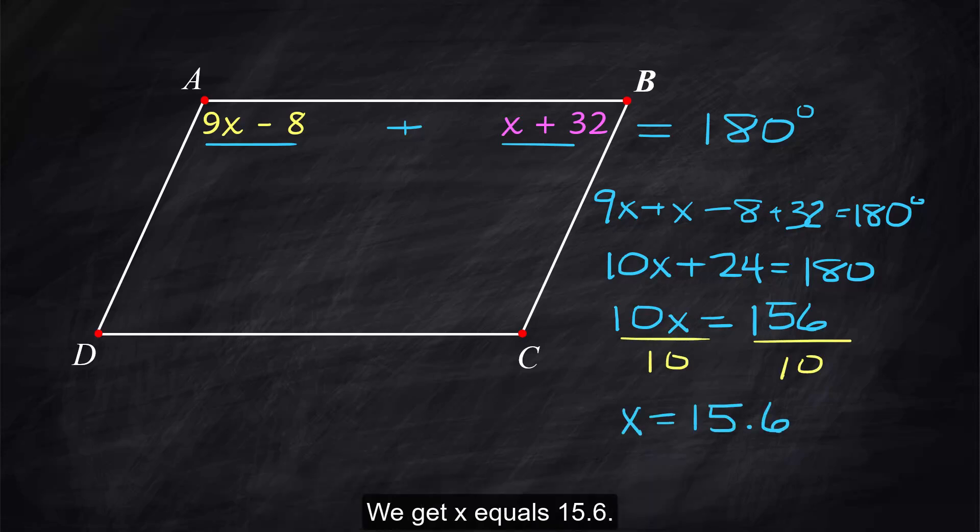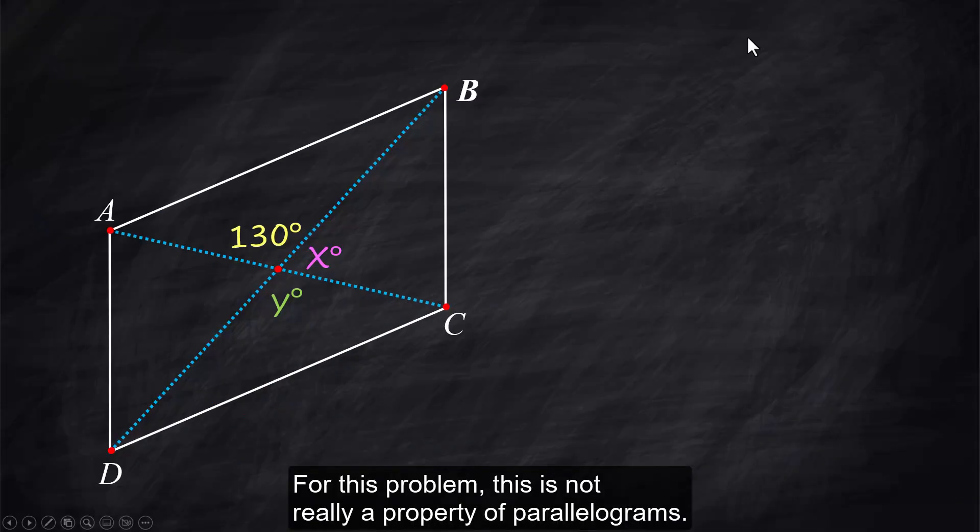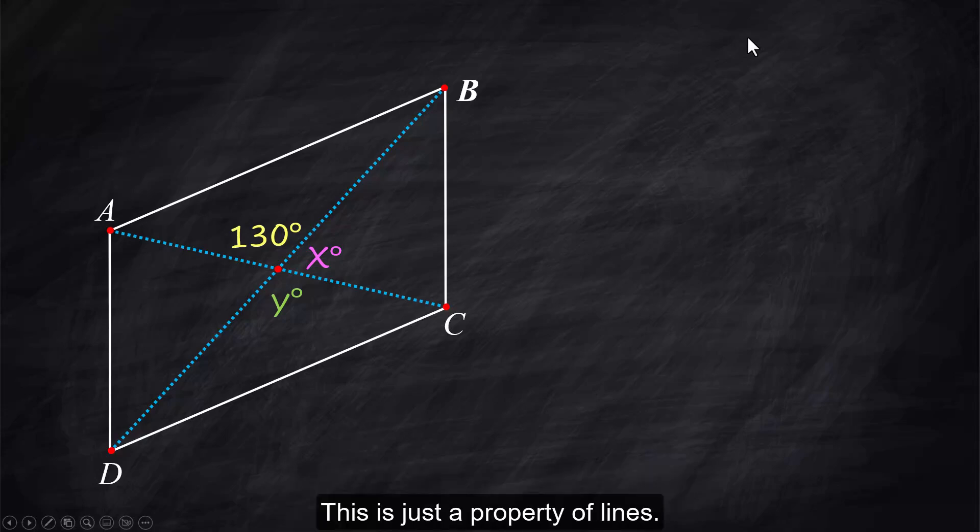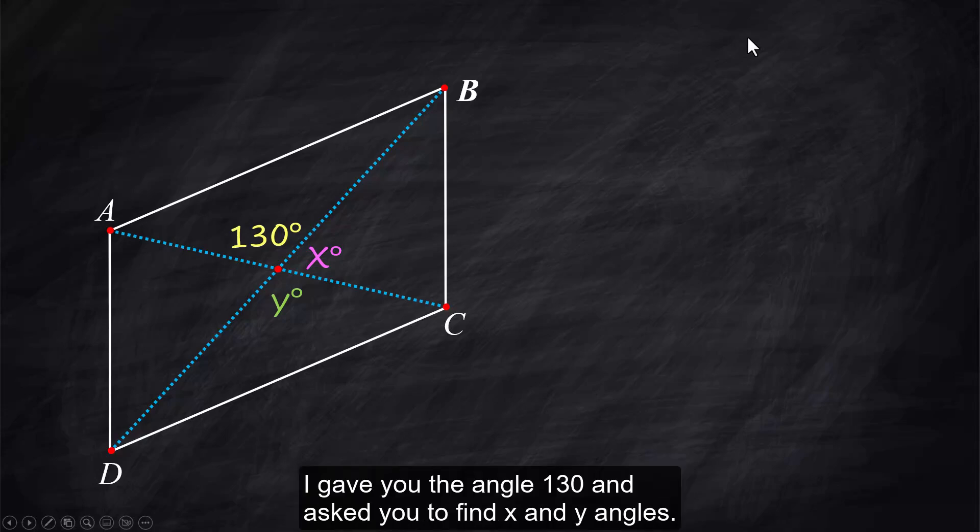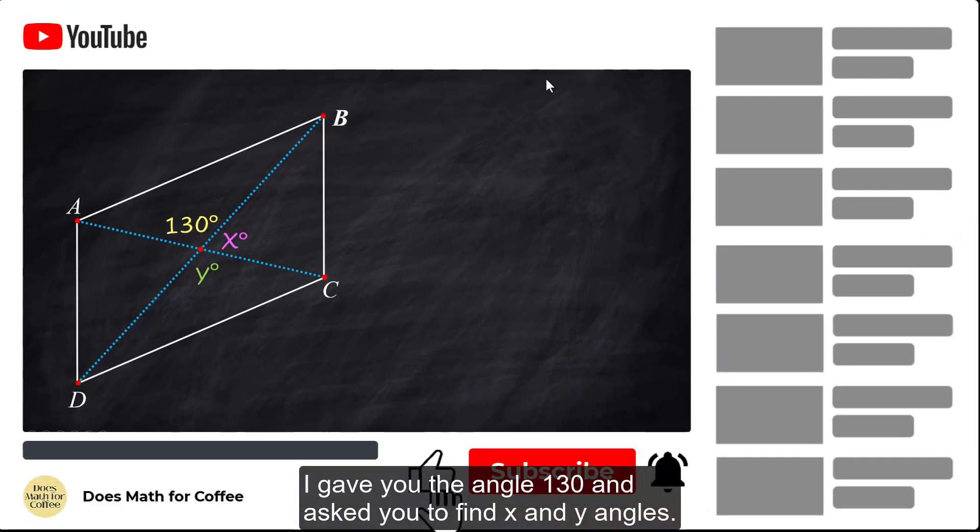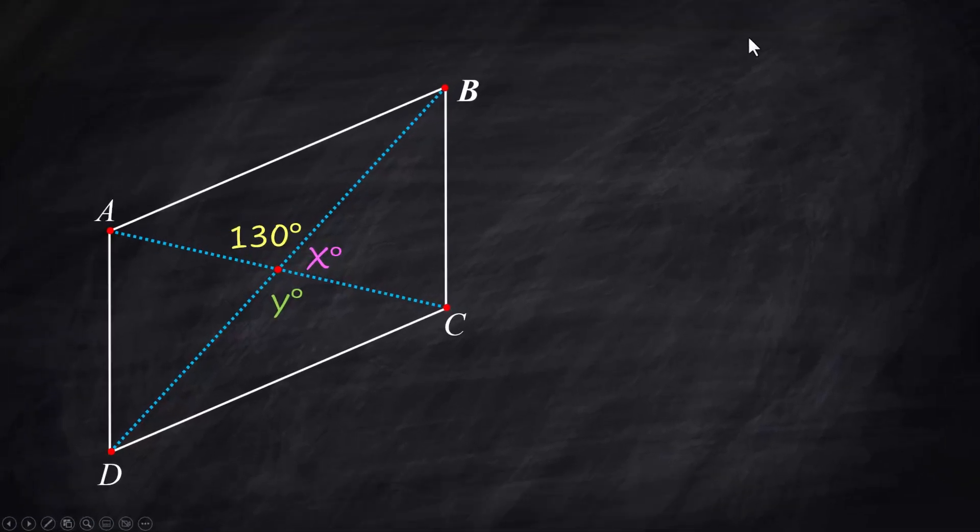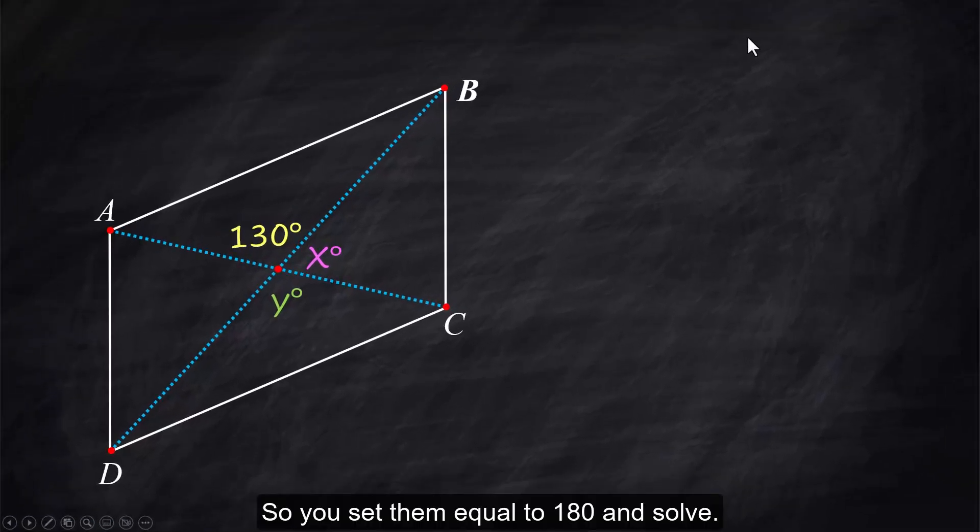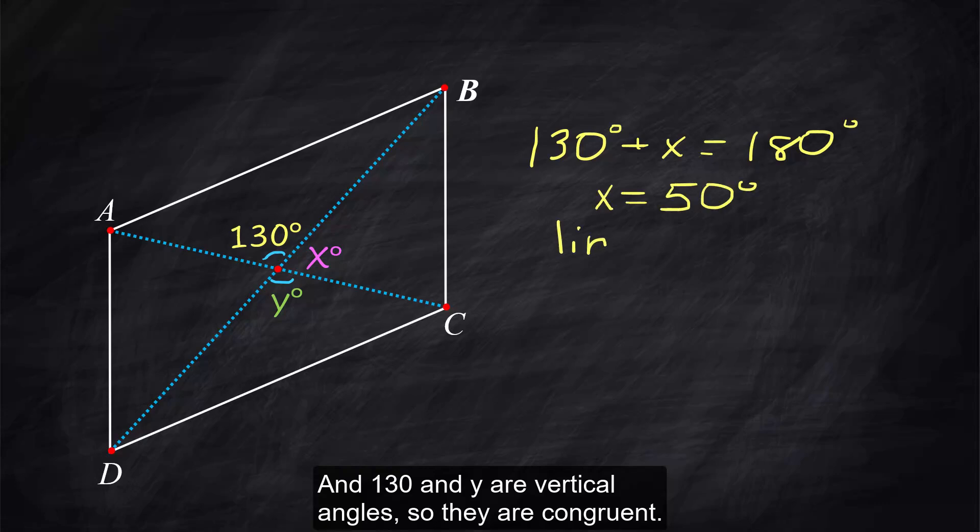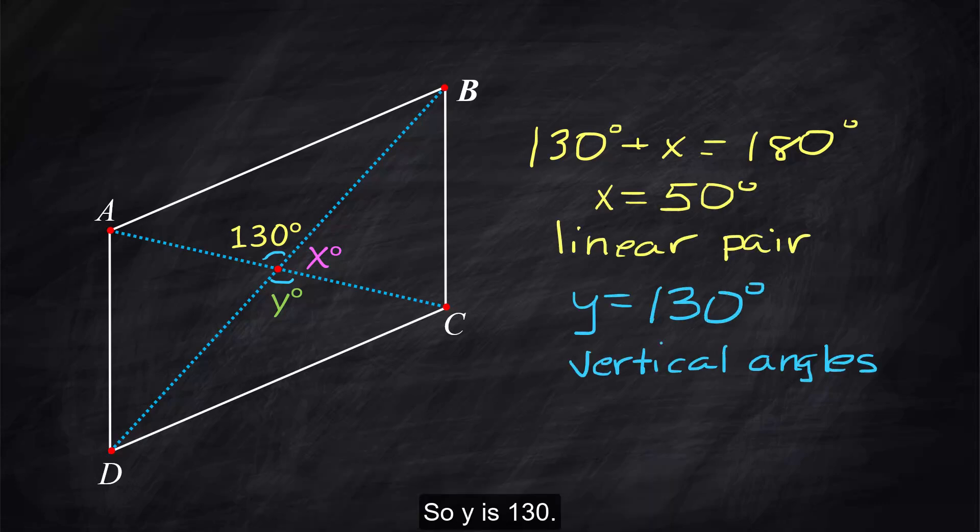For this problem this is not really a property of parallelograms this is just a property of lines. I gave you the angle 130 and asked you to find x and y angles. The 130 and x when you add them together they make a straight line so you set them equal to 180 and solve and 130 and y are vertical angles so they are congruent so y is 130.